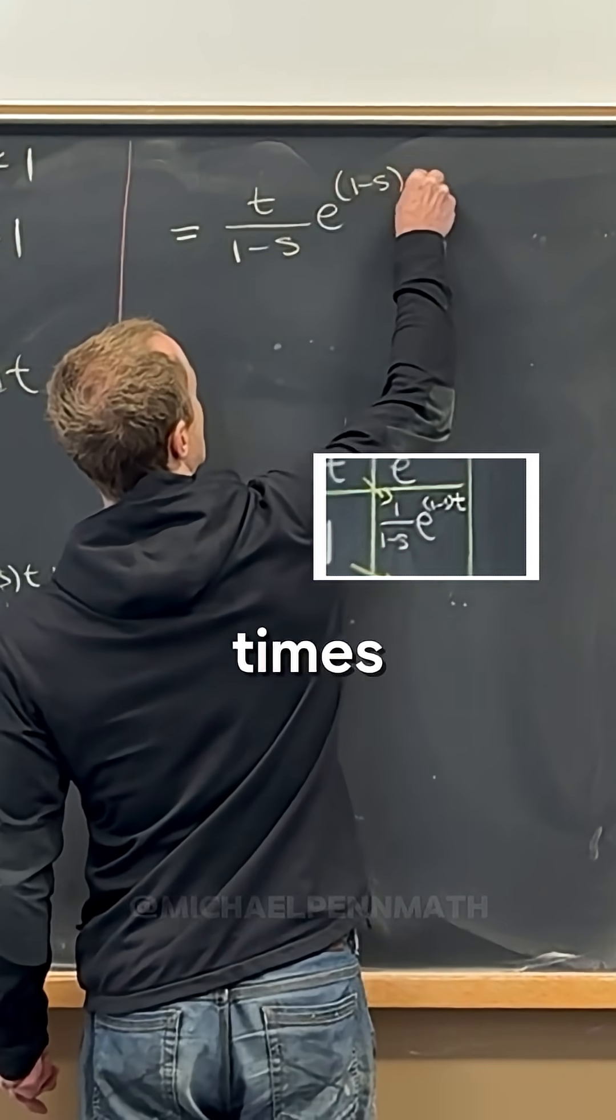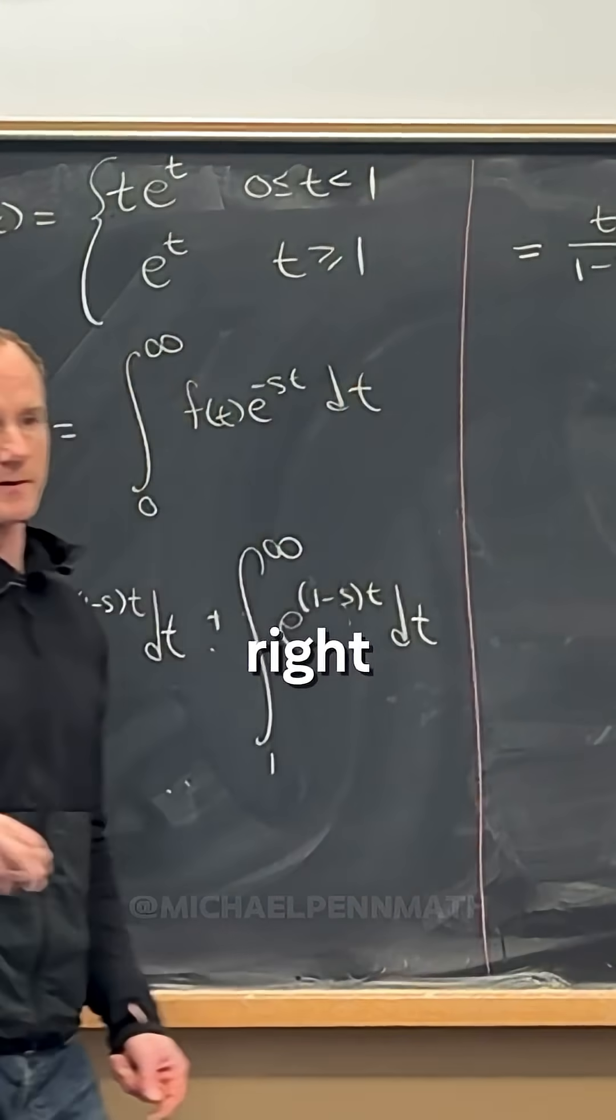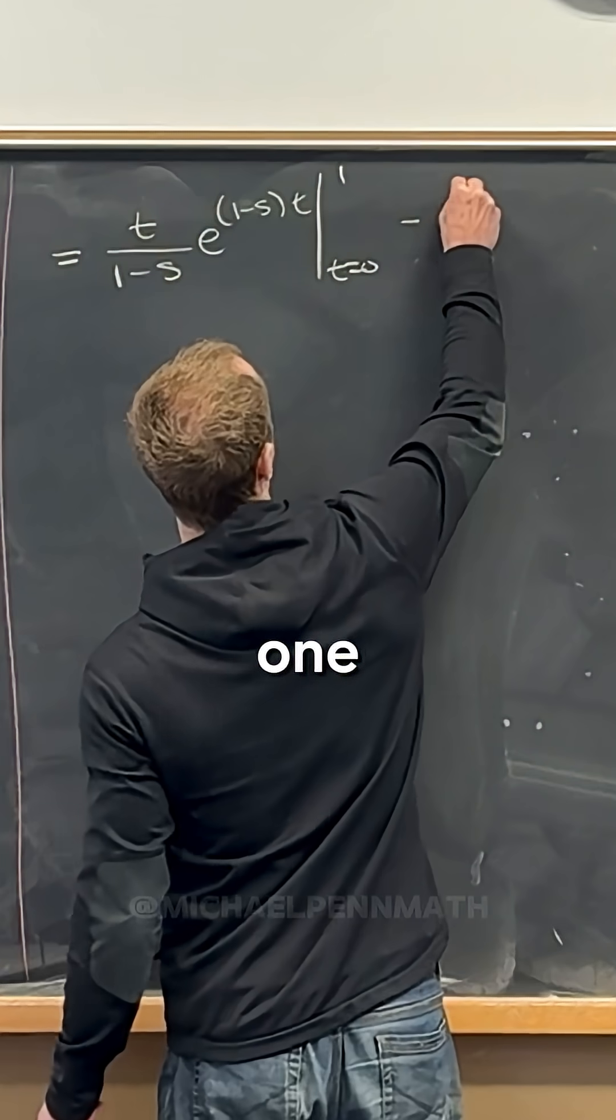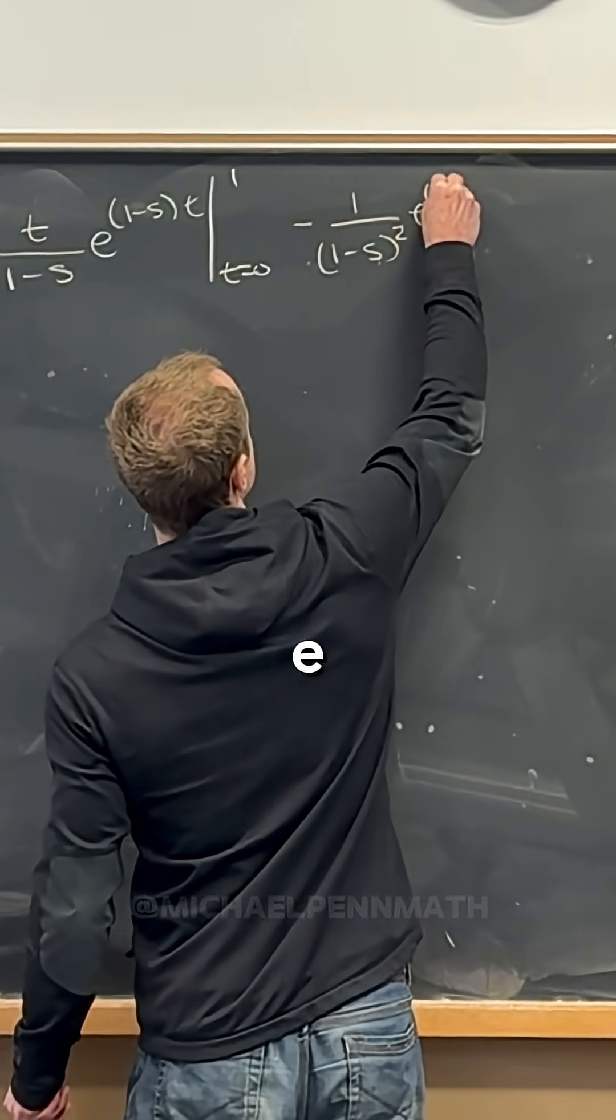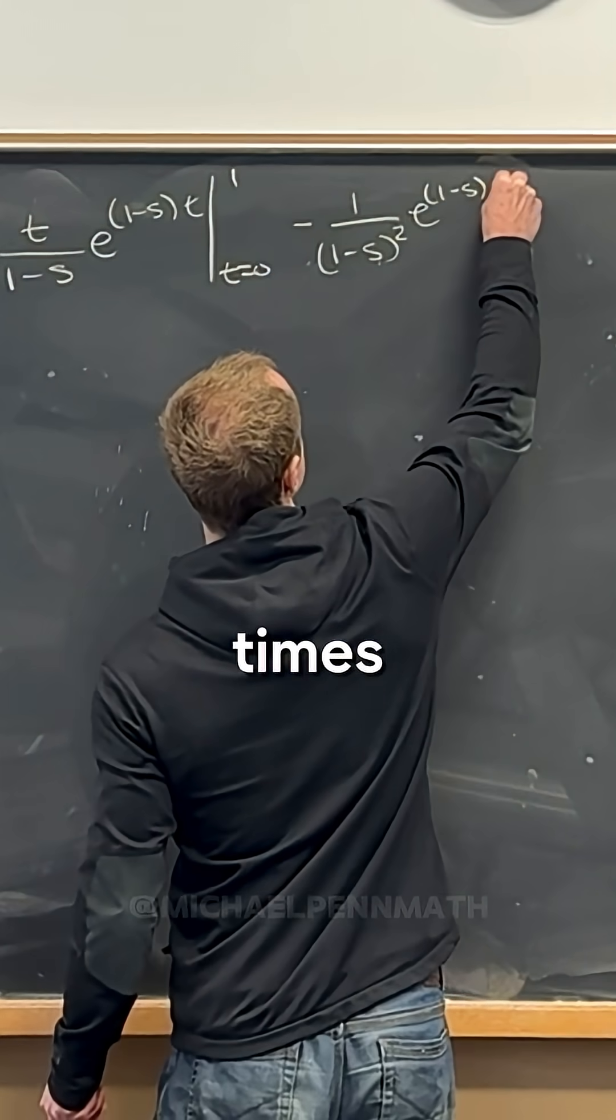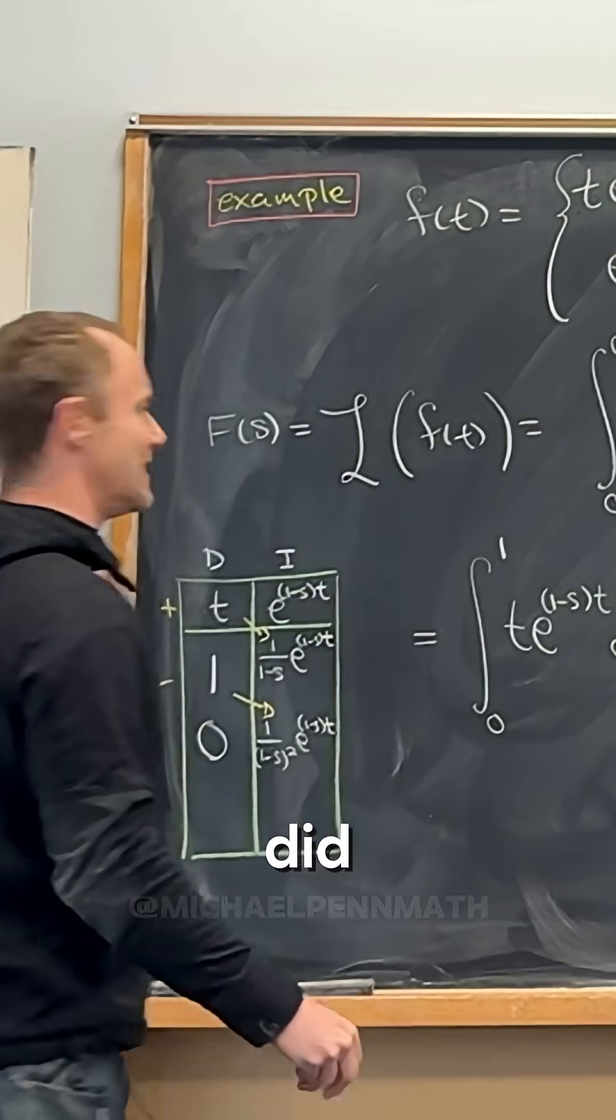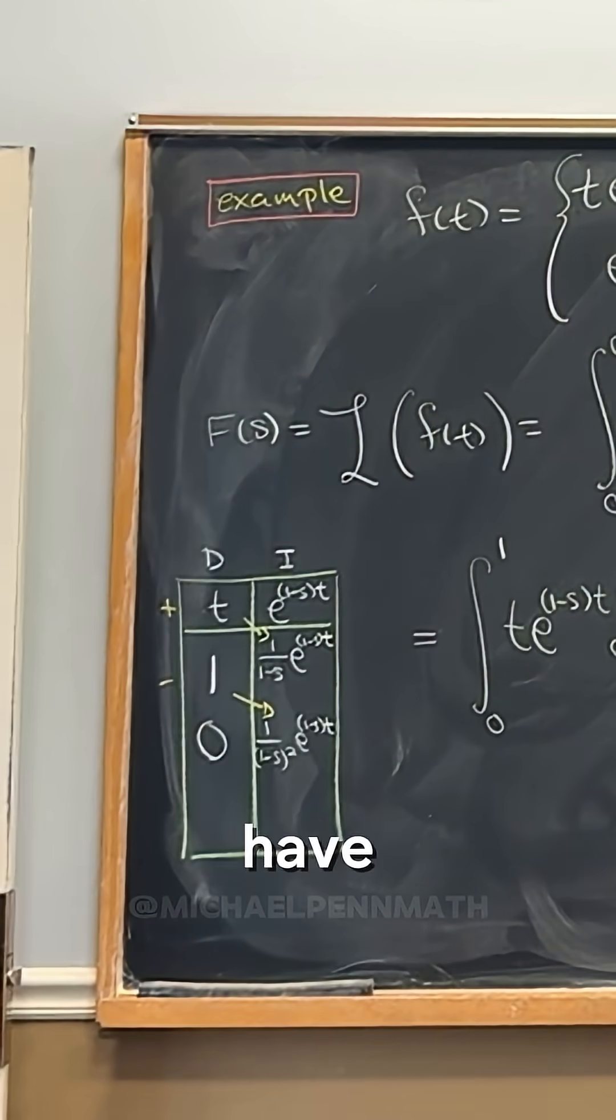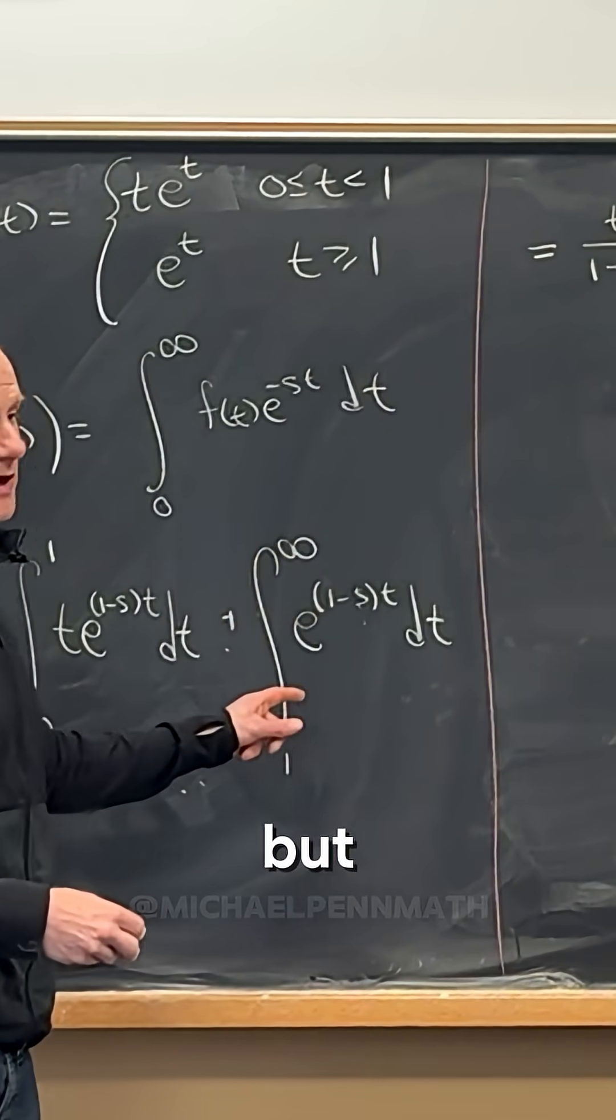Then minus 1/(1-s)^2 * e^((1-s)t) evaluated from 0 to 1. I did them individually but you could have put them together—it's the same thing. We can take the antiderivative of this one too, but we actually already did that problem. We know how to take the antiderivative.